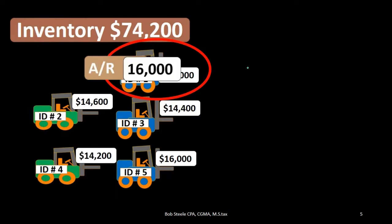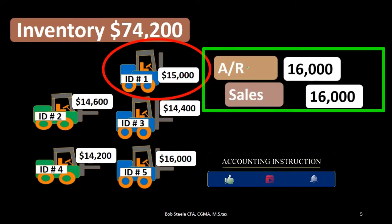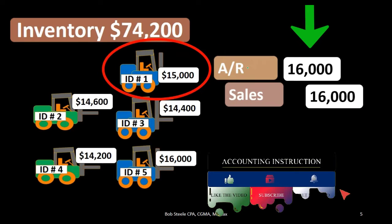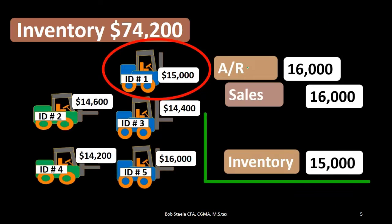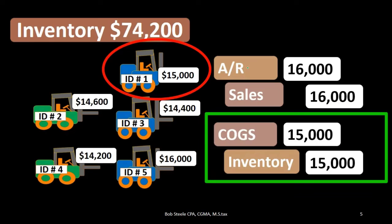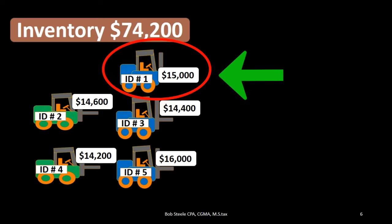Using specific identification, we do our journal entry recording the sales half: debiting accounts receivable and crediting sales for $16,000 — that being the sales price, having nothing to do with our cost tracking. Then we reduce inventory by the $15,000 cost and record the related cost of goods sold expense of $15,000, according to that specific identification.